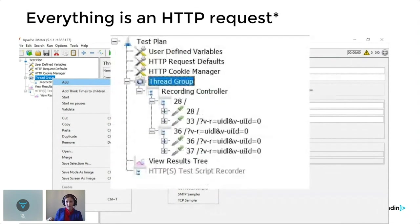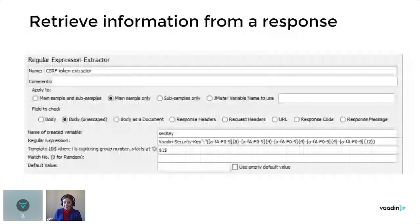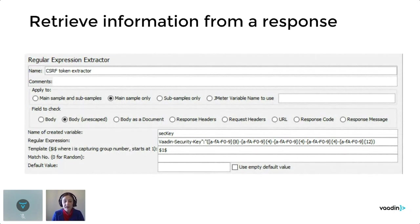The test plan can contain multiple thread groups, and each thread group can represent its own type of user — normal users, admin, etc. Now, the connection between Vaadin and JMeter: the cross-site request forgery token. We should extract it — retrieve the value from the response to make our recorded script executable. The Vaadin security key is sent with the first response and is in UUID format. You can use this regex to extract it.